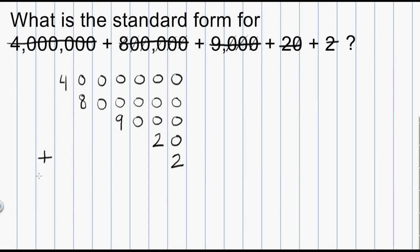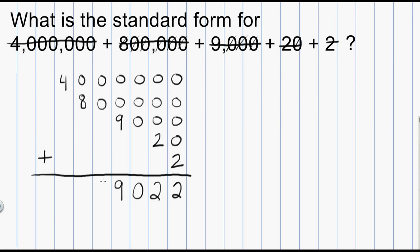Let's go ahead and add these up. Starting on the right: 0, 0, 0, 0, and 2 adds up to 2. Next column: 0, 0, 0, and 2 is 2. Next: 0, 0, and 0 is 0. Then 0, 0, and 9 gives me 9. Next: 0 and 0 gives 0. Then 0 and 8 is 8. And finally, 4 — nothing left to add. I put my commas in, and this number in standard form is 4,809,022.